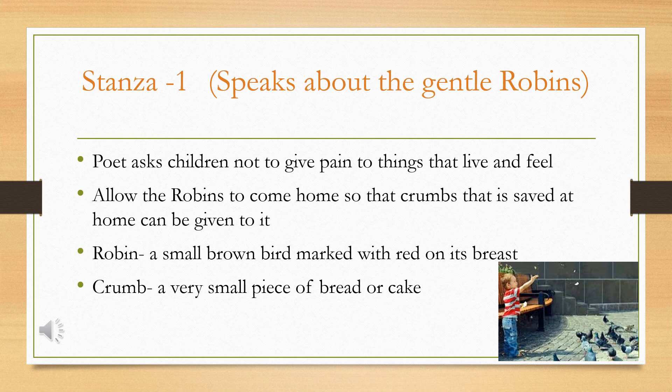Little children, never give pain to things that feel and live. Let the gentle robin come for the crumbs you save at home. The poet asks the children not to give pain to things that live and feel — that which has life in it. He asks to allow the robins to come home. A robin is a small brown bird marked with red color on its breast. You can give the crumbs saved at home — a small piece of bread or cake — to the robin.